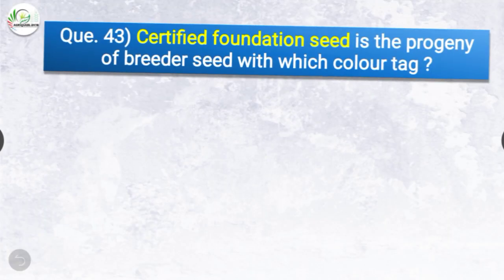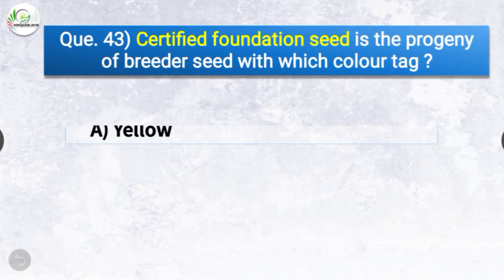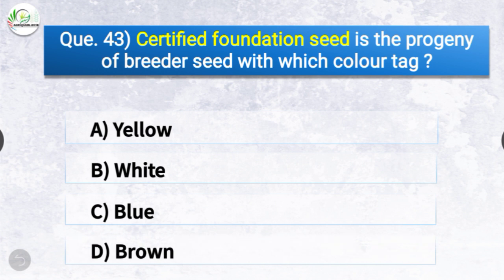Question number forty-three: Certified foundation seed is the progeny of breeder seed with which color tag? The options are yellow, white, blue, or brown. The correct answer is option B — white. Certified foundation seed is the progeny of breeder seed with a white color tag.